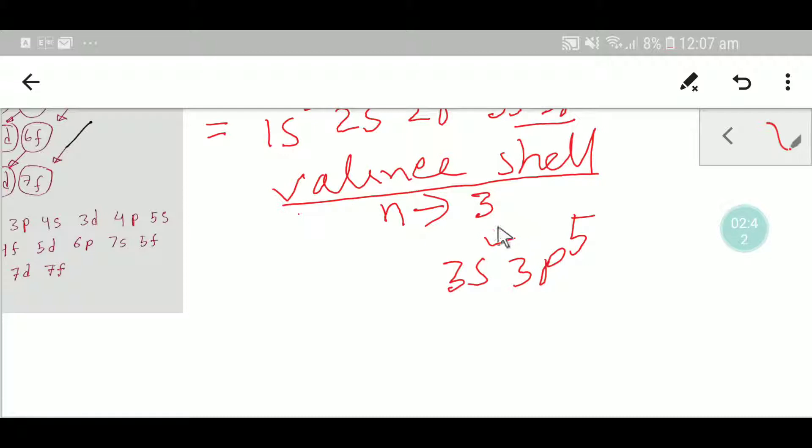So here we have 5 plus 2, that means 7 valence electrons.